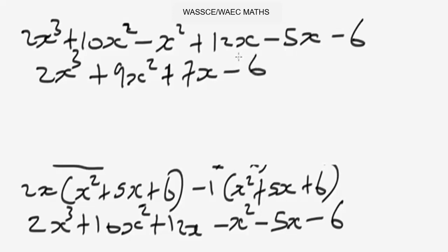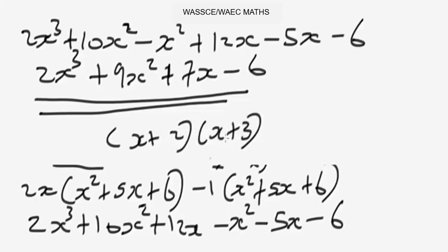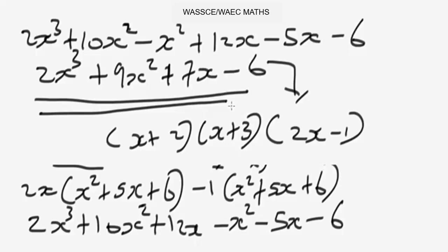That will be the final answer. This is the algebraic expression — the result of simplifying x plus 2, times x plus 3, times 2x minus 1. That's basically how you deal with problems involving triple brackets in algebra when simplifying them.